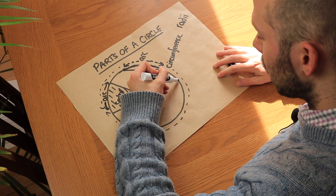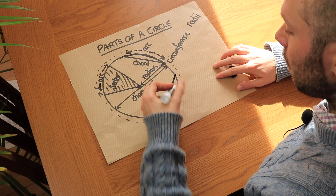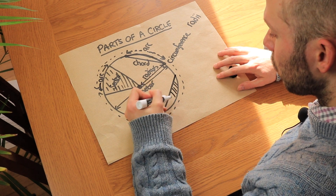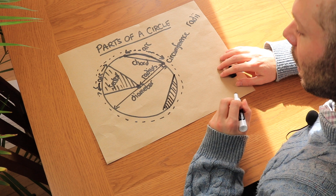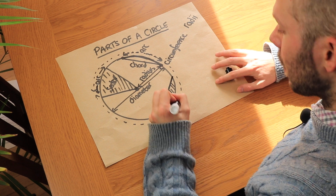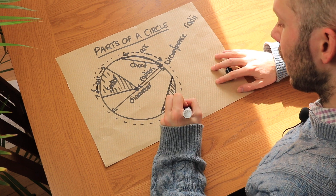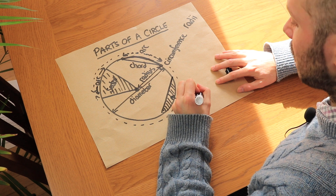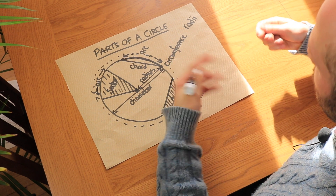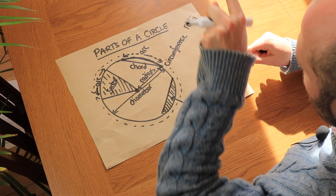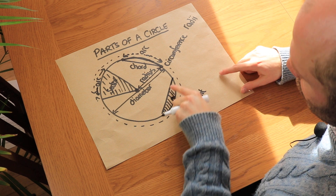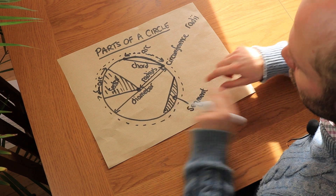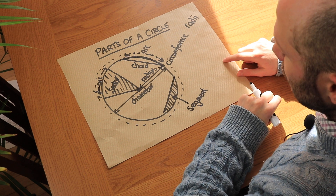If we draw a chord, then the region between a chord of the circle and the circumference is known as a segment. A helpful way to remember this: if you open an orange or a tangerine, it's divided into segments which kind of look like that shape — and that's how to remember it's called a segment.